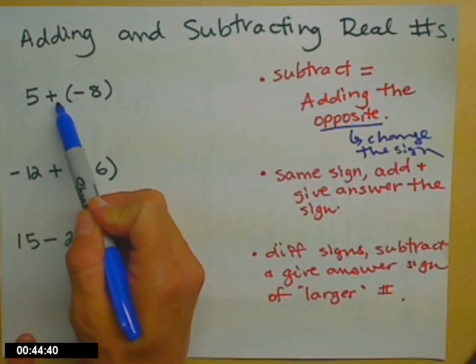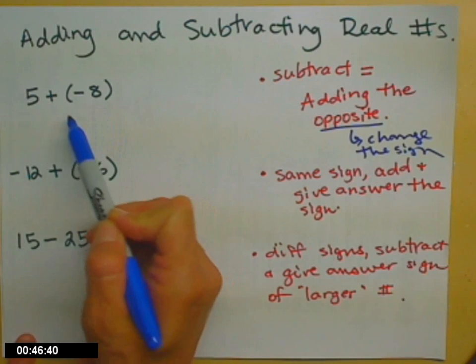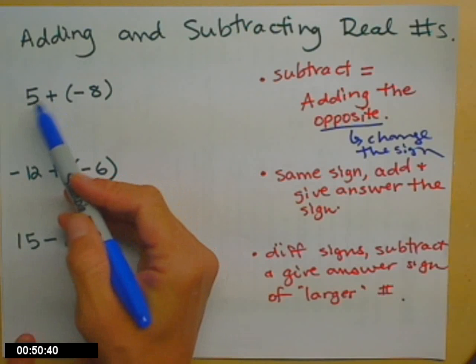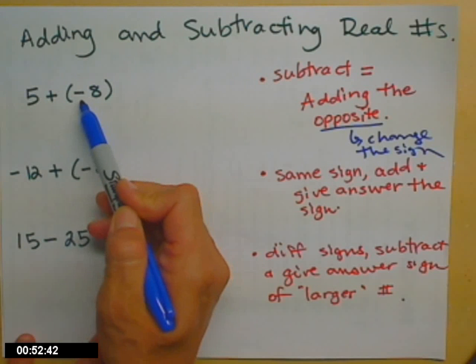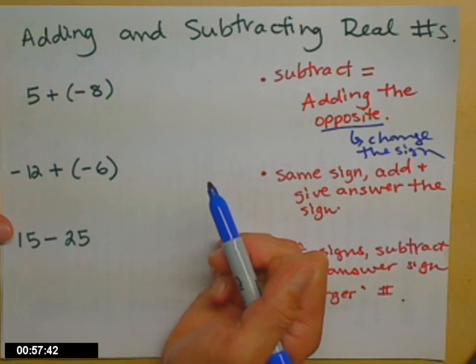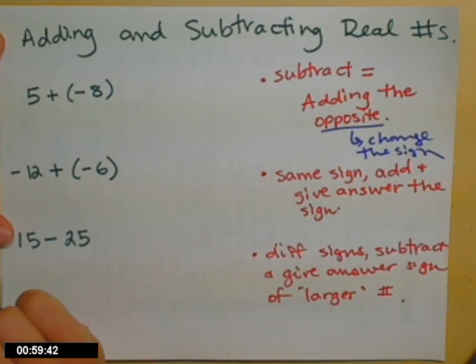So if we look here, I have 5 plus negative 8. Notice the negative 8's in parentheses because I don't want the plus and minus right next to each other. So think of this, you have $5 but you owe $8. Think about where you're going to end up. So you know the answer now in your head.